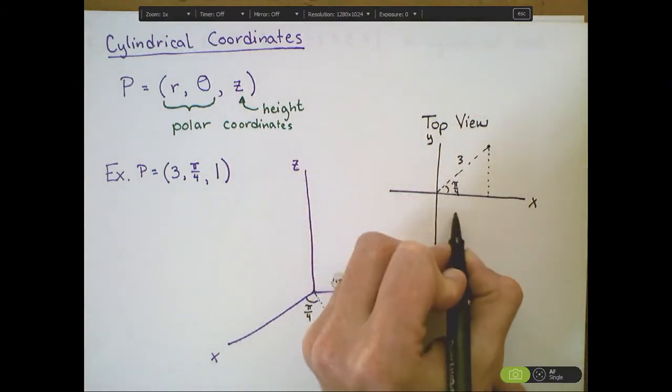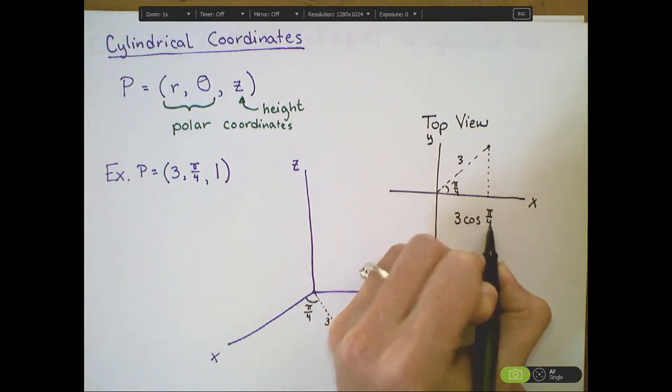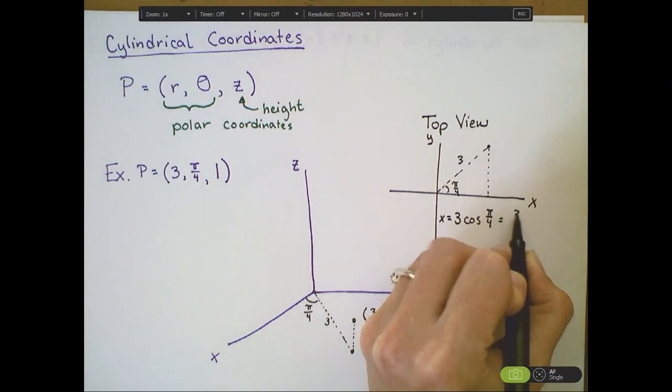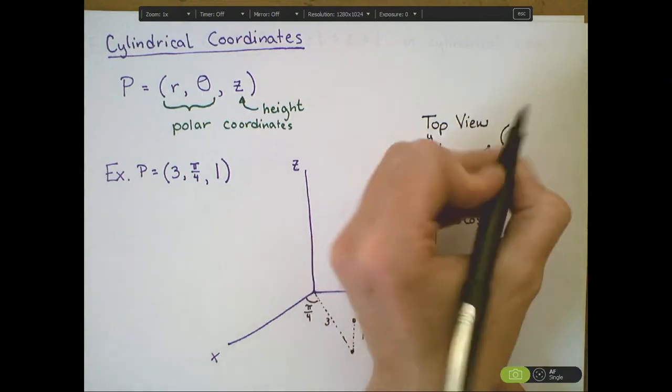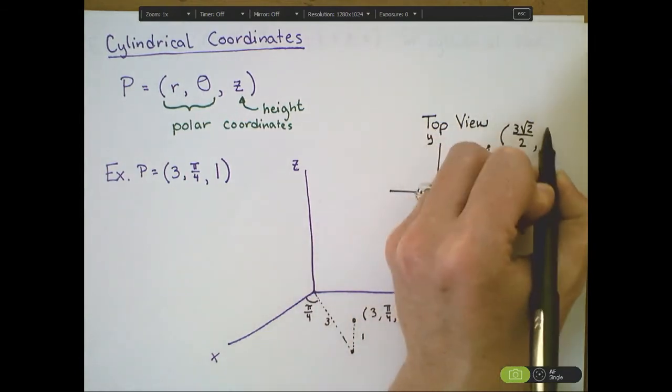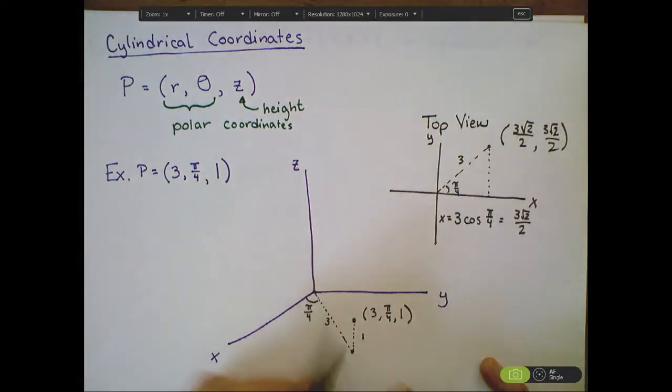we found that the x-coordinate is going to be 3 times the cosine of pi over 4, which is exactly equal to 3 times the square root of 2 over 2. 3 times the square root of 2 over 2. And the y-coordinate is also 3 times the square root of 2 over 2, because it's a right triangle.